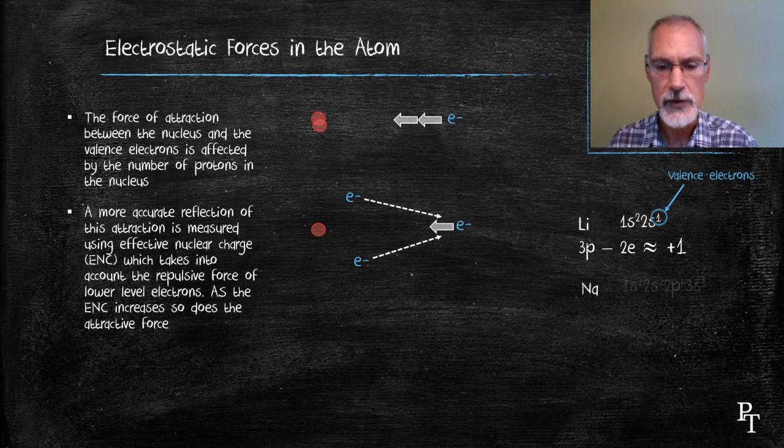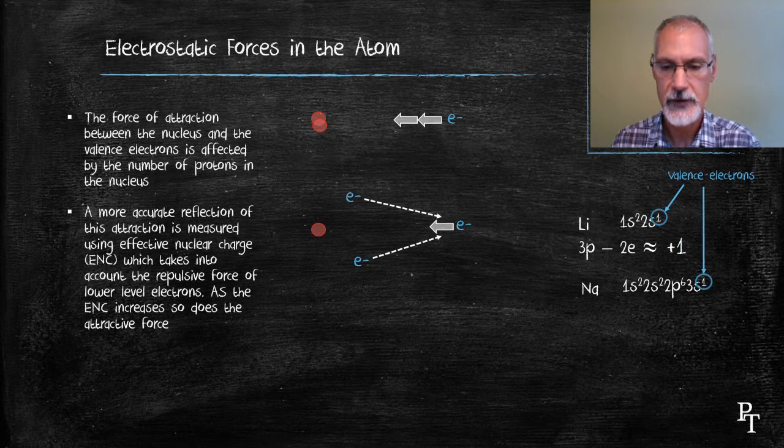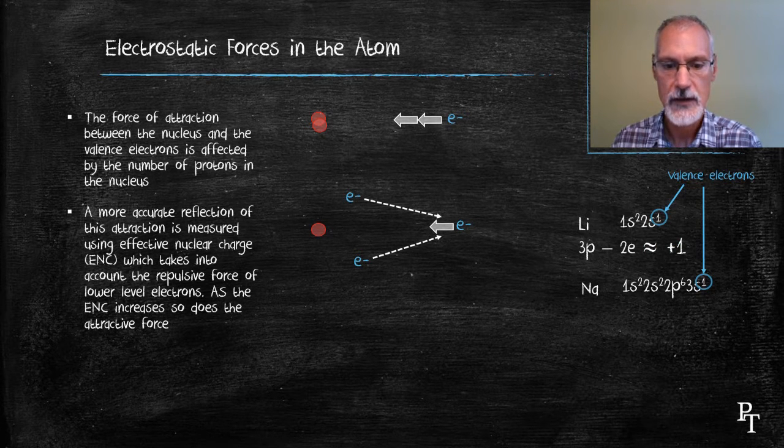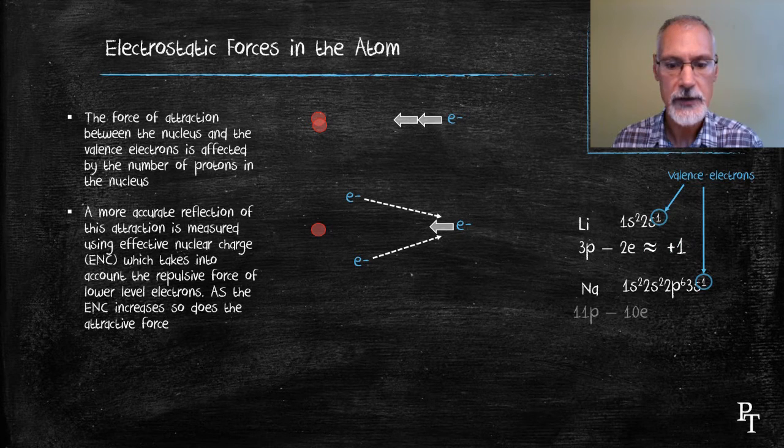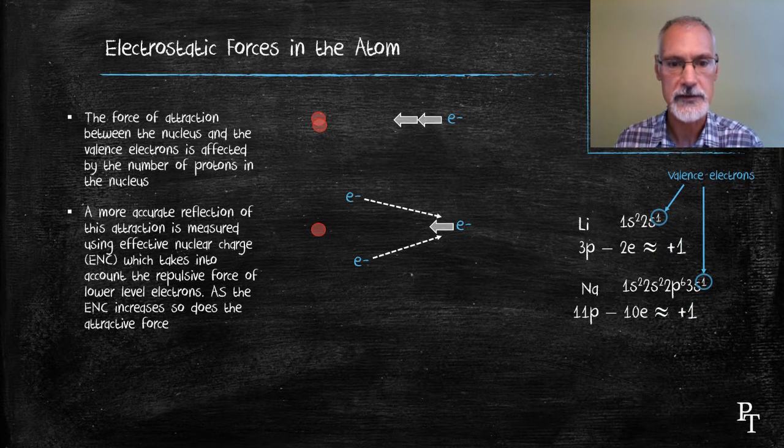Let's take a look at the element sodium and its configuration. Again, I'll identify the one valence electron that it has, and that then leaves it with ten inner-level electrons. Sodium possesses eleven protons. Take away those ten electrons. It also has a positive one, effective nuclear charge.